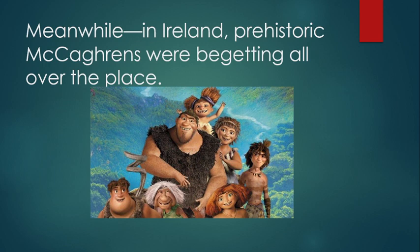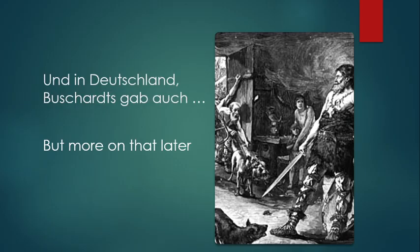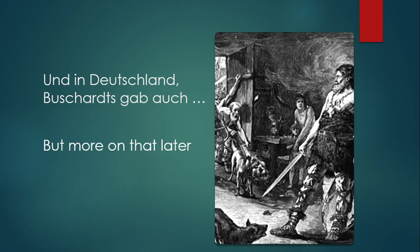Meanwhile in Ireland, prehistoric McCarrans were begetting all over the place — that's my mother's people. Our lineage there can be traced back to Fergus Moore McGurk, a long time back. And in Deutschland, Buscharts were also begatting, and that's where my father's people originated, our family name. The first of my lineage in America was Jacob Buschart, who immigrated here from Belgium before the Revolutionary War.